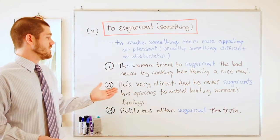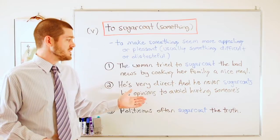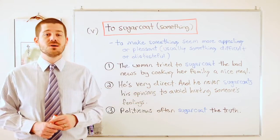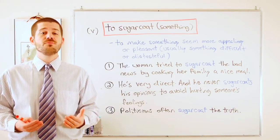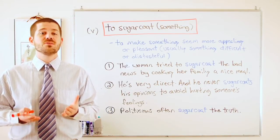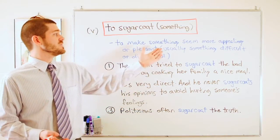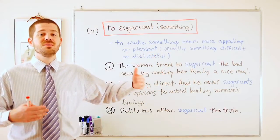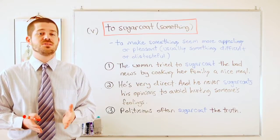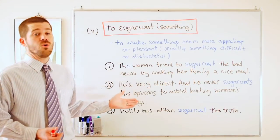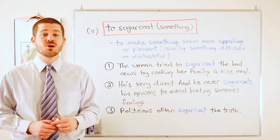Another example: he's very direct and he never sugarcoats his opinions to avoid hurting someone's feelings. Maybe his opinions are hurtful, but it's necessary for him to tell the truth. He doesn't try to make his opinions seem nicer or more pleasant — he says them directly and honestly. He does not sugarcoat his opinions.